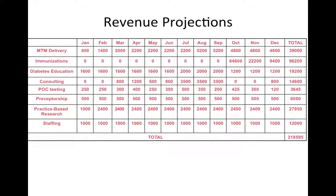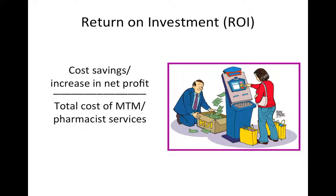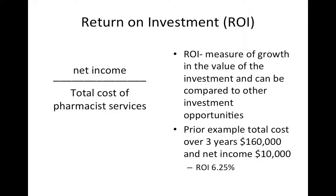You can make revenue projections based on different activities — clinical services, prescription drug sales, over-the-counter goods, diabetes classes, and immunizations. Lenders will look at your return on investment, which is the measure of growth of what you invest into your company. Banks are investing money into your company and hoping your business makes a return on that investment.